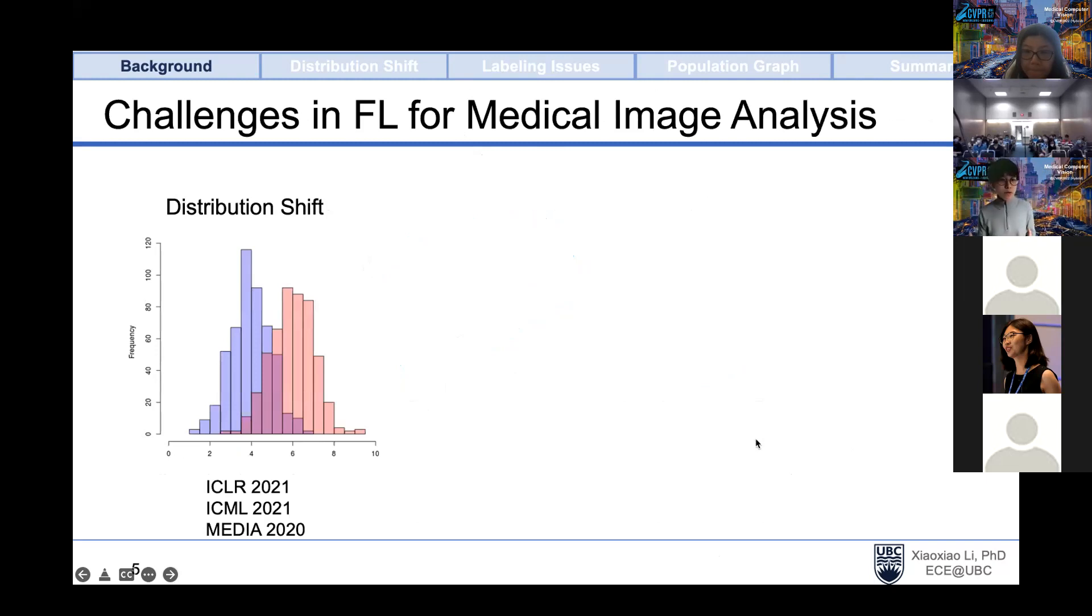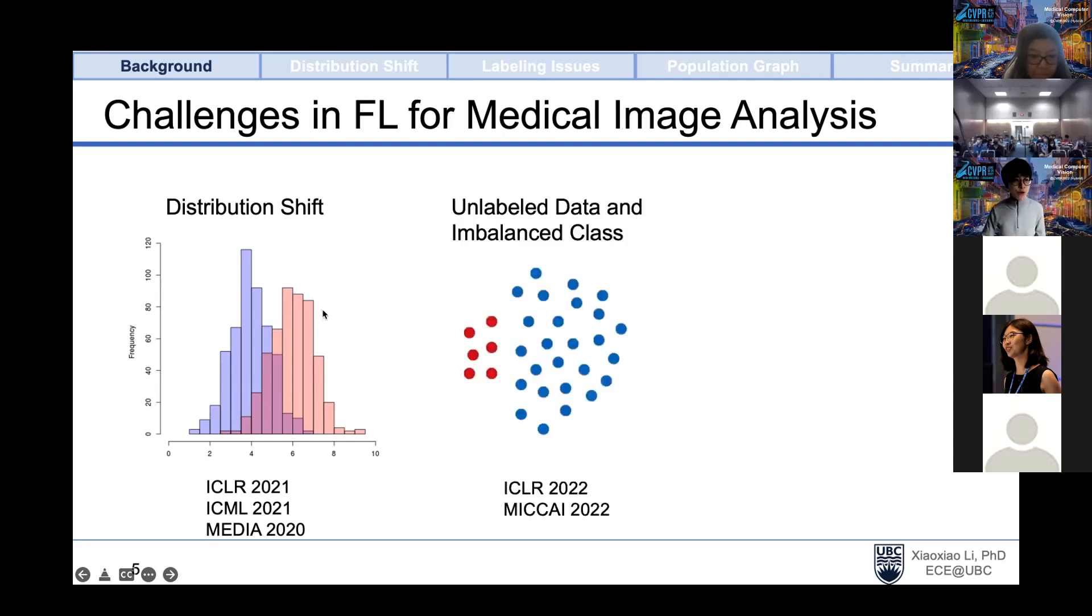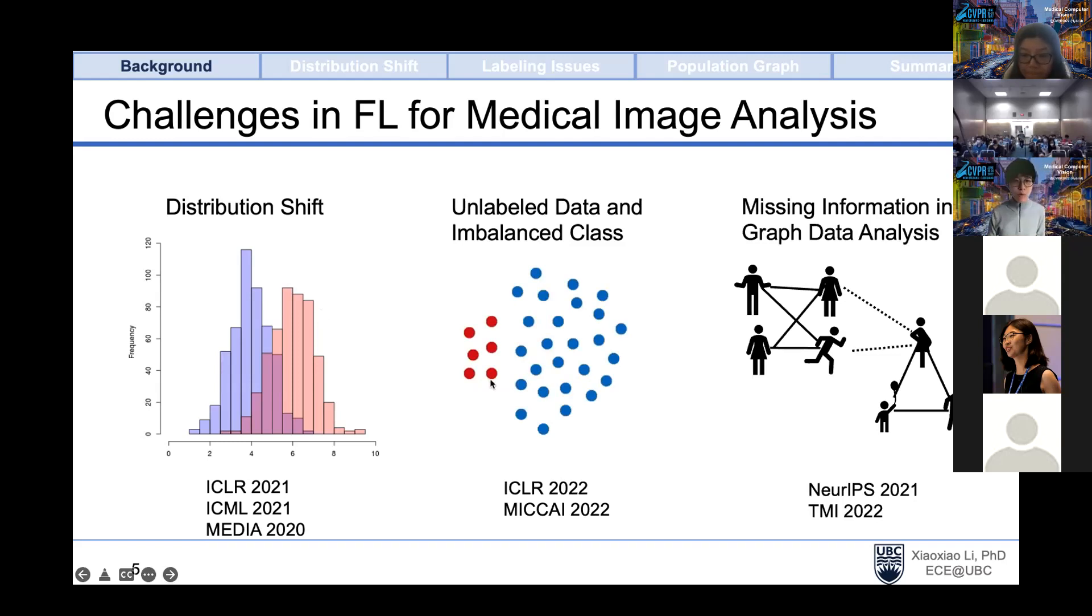We hope to get a well-trained global model from the central server that can be better than any of the private models trained locally. However, there are several challenges of applying this training scheme for multi-center medical data analysis. If we look at the data appearance, the distribution of data in different centers can be very different, known as distribution shift. If we look at data labeling, medical centers usually have unlabeled data and also suffer from class imbalance. Medical data can be naturally formulated as graph based on patient's demographic similarity, but in Federated Learning, missing links between patients in different hospitals will be an issue.